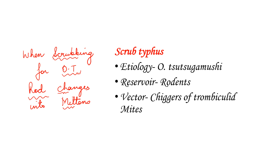Next, scrub typhus. The mnemonic is: 'When scrubbing for OT, rod changes into mittens.' When scrubbing for OT we wear gloves, but here I have written mittens — mittens are basically gloves of small babies. So the disease scrub typhus has Orientia tsutsugamushi as the etiological agent, the reservoir is rodents, and the vector is chiggers — remembered from the word 'changes.' Chiggers are the larvae of trombiculid mites, and mites is represented by 'mittens.'